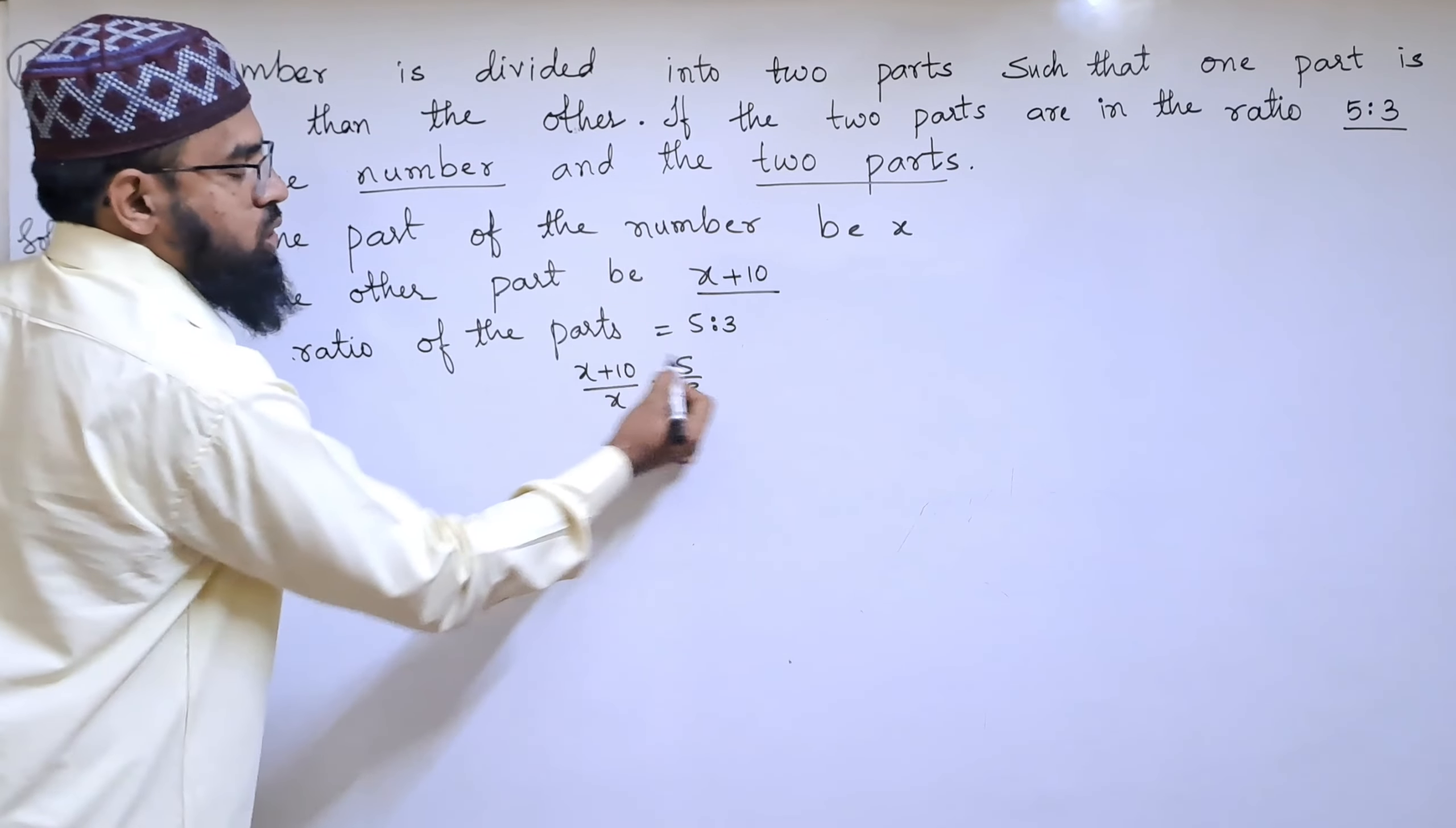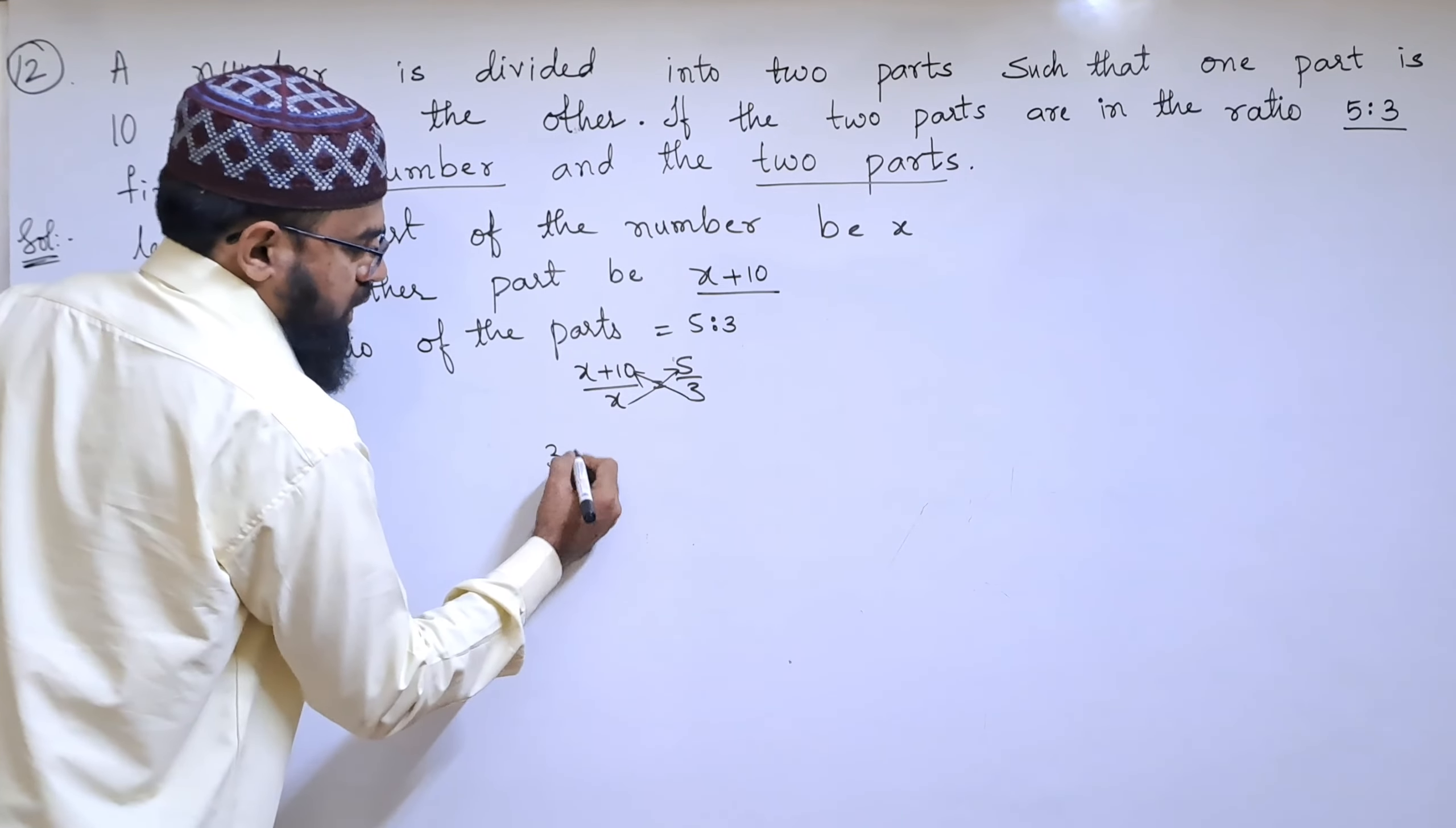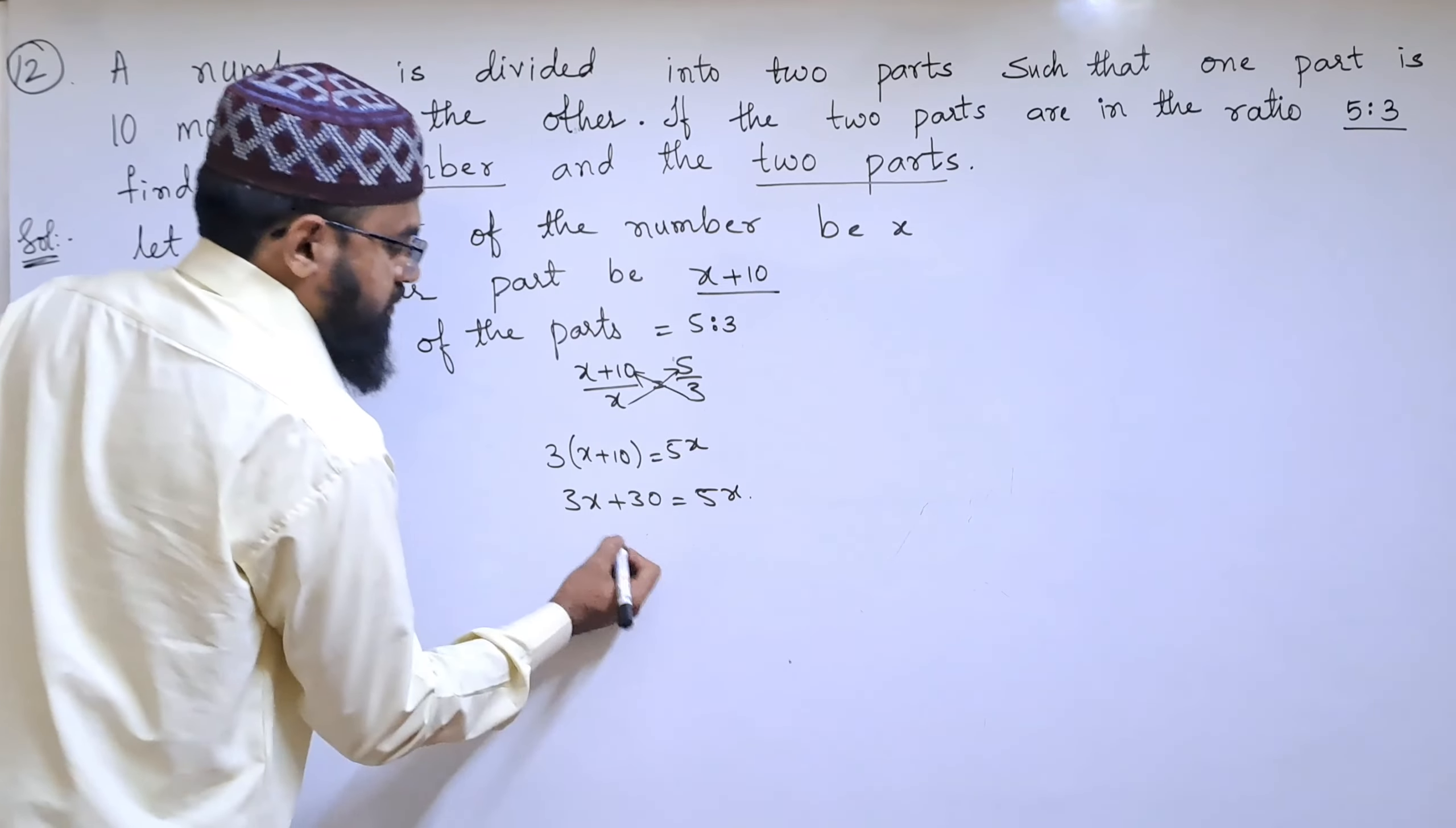Let us cross multiply. 3 times (x+10) equals 5 times x. So 3x plus 30 equals 5x.